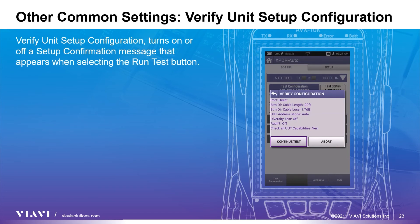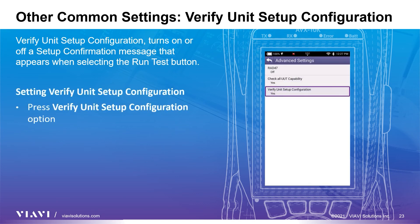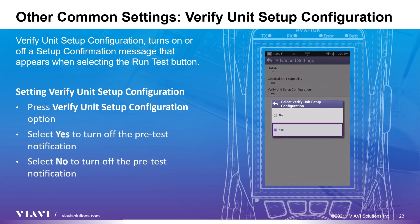The final standard setting is the verify unit setup configuration, which turns on or off the setup confirmation message that appears when selecting the run test button. In this window, you can confirm all of the setup parameters before initiating the test. This prevents stopping and restarting the test by providing a final chance to verify your setup parameters are correct, and prevents test failures due to improper setup. Set to yes to show the setup confirmation before testing, or set to no to hide it.